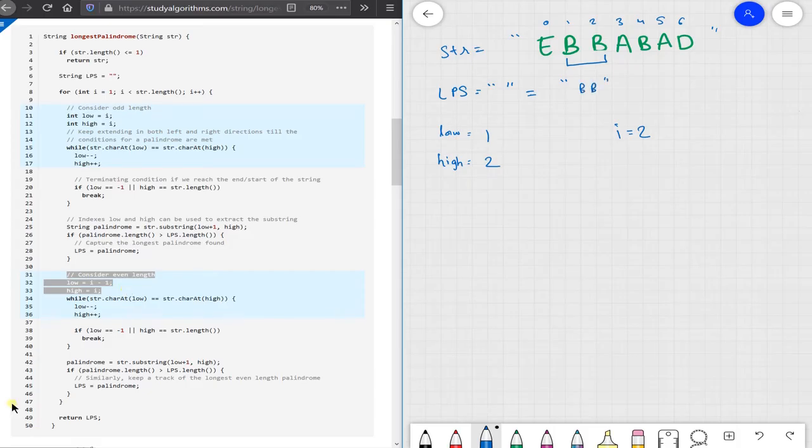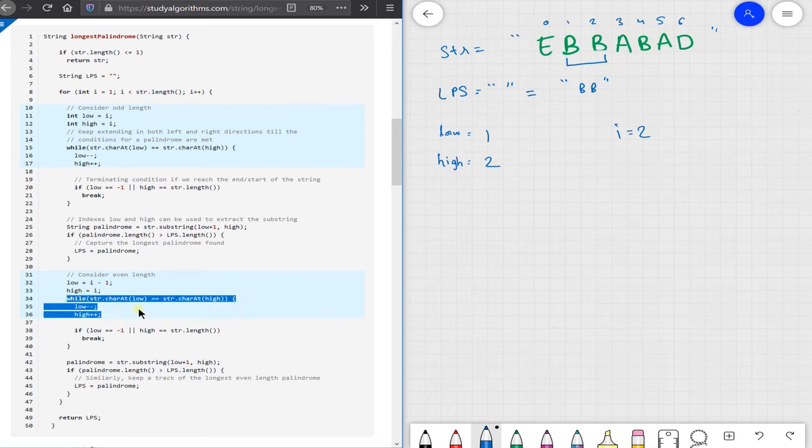When we are looking at the even length palindrome, the value of low is 1, and the value of high equals to 2. The string we are looking at is bb. Now this is a valid palindrome, and hence, we would be updating our longest palindromic substring that we found to bb. We stopped here because when we try to lower the value of low, and we try to expand the value of high, we get low as 0, and high as 3, which is ebba. And this is not a valid substring. So we didn't do anything about it.